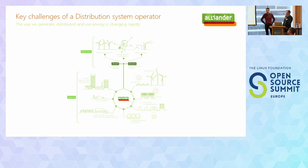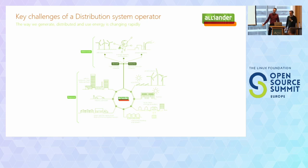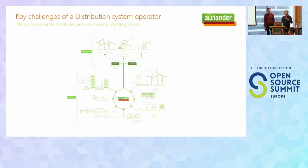Let's get started with the key challenges a distribution system operator is facing today. In 10 years time, the way we live, work or travel won't be the same. This is necessary since fossil fuels are becoming more scarce and have a growing impact on our environment. Everywhere in the world new initiatives are emerging to conserve energy and make it more sustainable. The way we generate, distribute and use energy is changing rapidly.